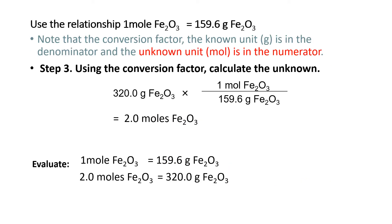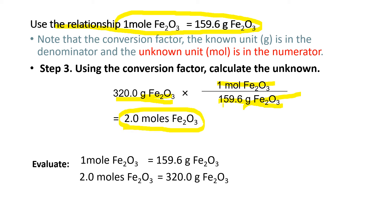This is the conversion factor to establish. Step 3: using that conversion factor, calculate the unknown. The given is 320 grams of iron(III) oxide, multiplied by the factor: 1 mole of iron oxide over 159.6 grams. Since the given is in grams, grams must be on the denominator of the conversion factor. Multiplying 320 times 1 divided by 159.6 gives you 2 moles of iron oxide.